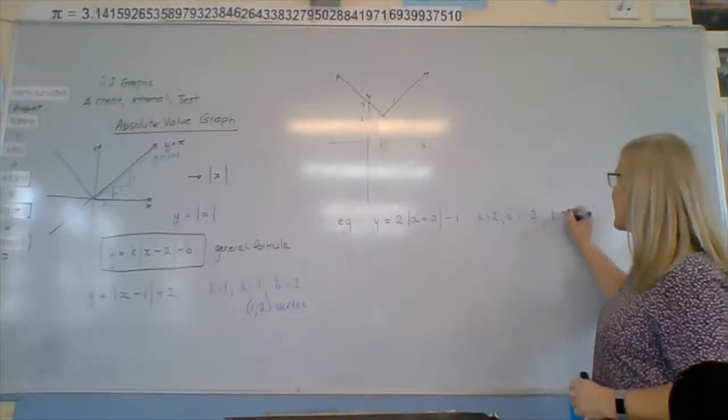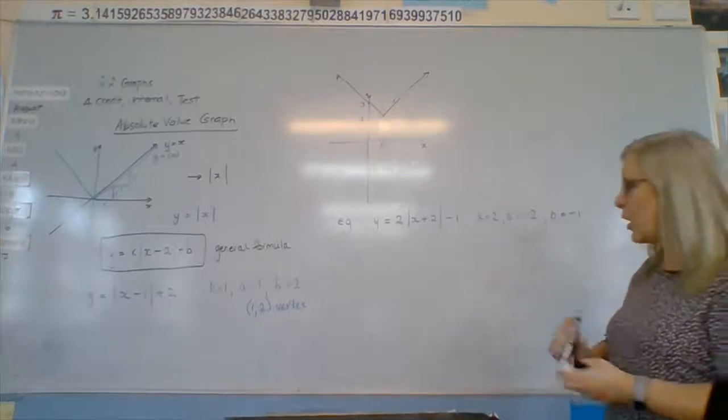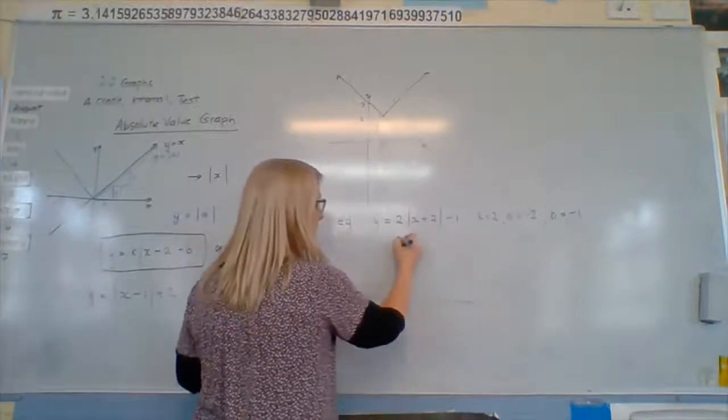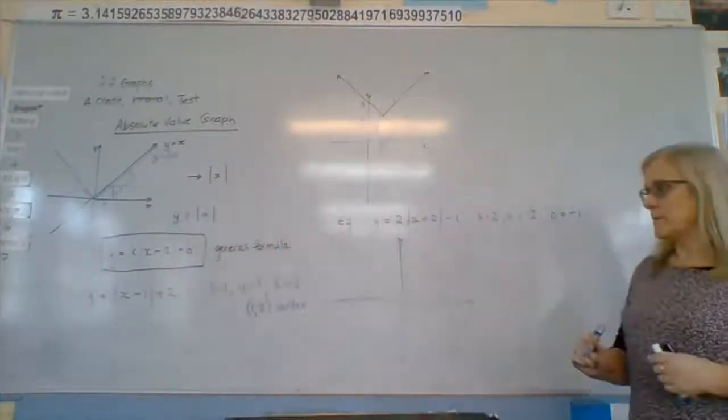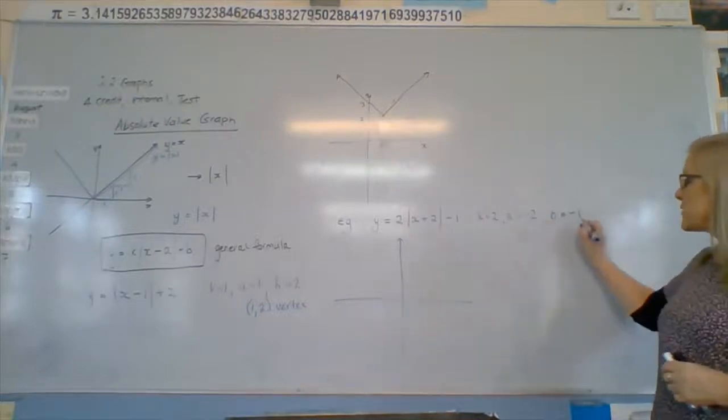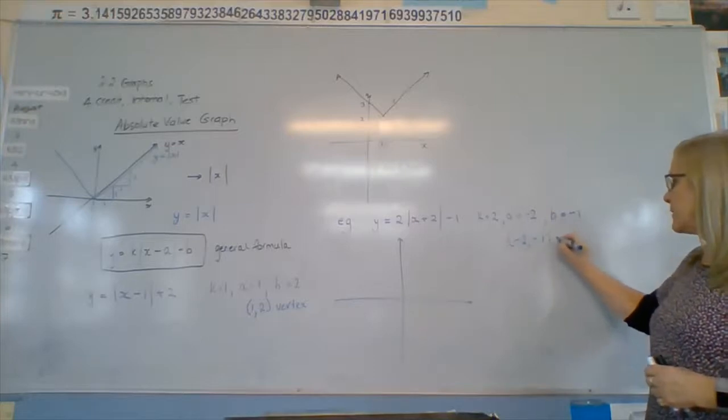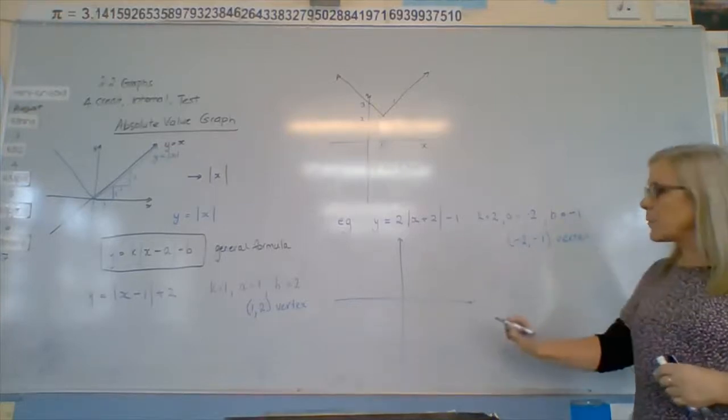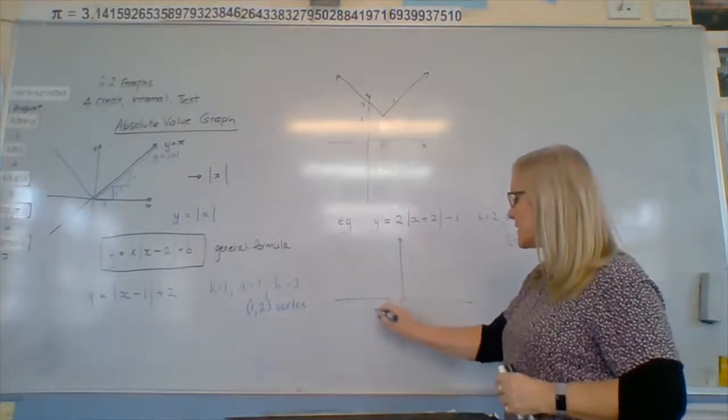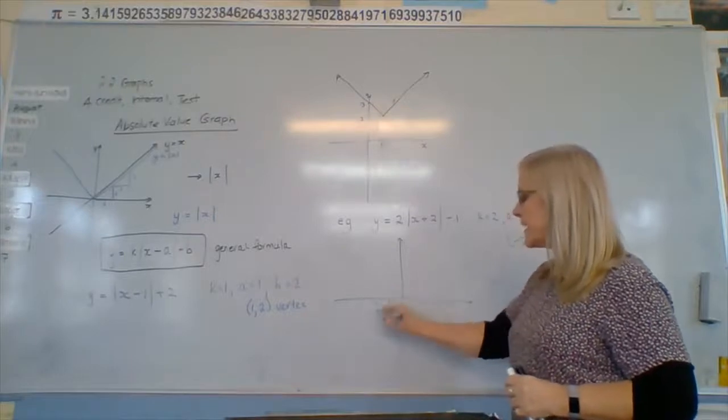And b is negative one. So this time our graph is going to go. Where's our vertex? Negative two, one. Negative one. So we find that value. Negative two, one, two, down, one. It's here. That's our vertex.